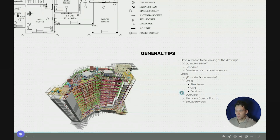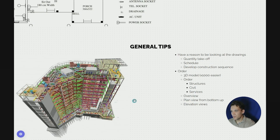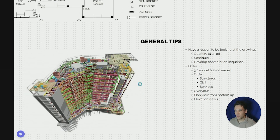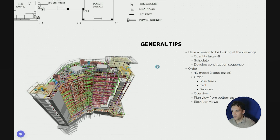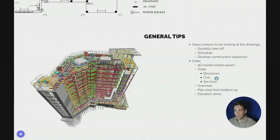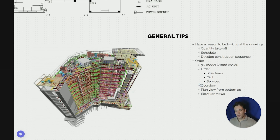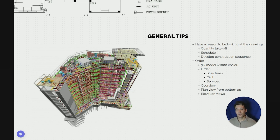The order in which I look at documentation is important — don't just dive into a section view or you'll confuse yourself. If there's a 3D model, always look at it first. 3D models make complicated structures a trillion times easier than flicking through drawings trying to match up layout views with elevation views and section views. You can spend two minutes looking at it and get a really good understanding of what you're building. Then I'll typically look at structural drawings first, then civil drawings, then services drawings. Start with the plan view or overview, then the plan view from the bottom up, then the elevation views.